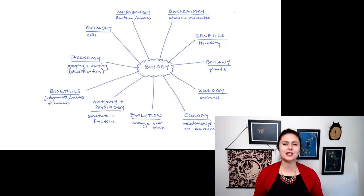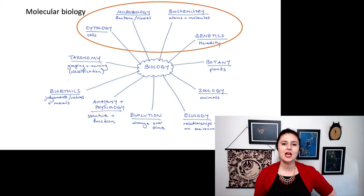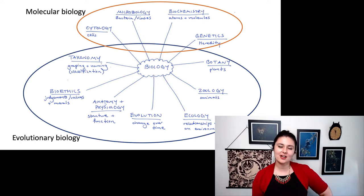So we can bring this back to this diagram here. These fields at the top, those are all within molecular biology. And everything down here, that's within evolutionary biology. I would like to point out that bioethics is really within both of them in different ways, and genetics really does span the boundary, because we use genetics a lot when we're talking about evolutionary biology.